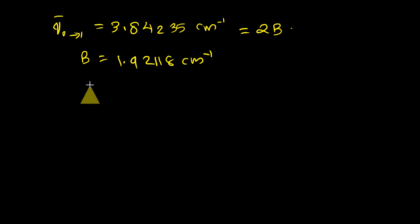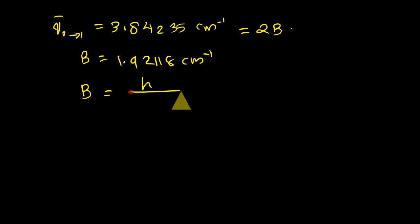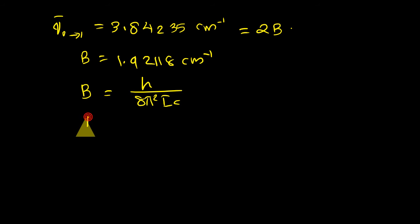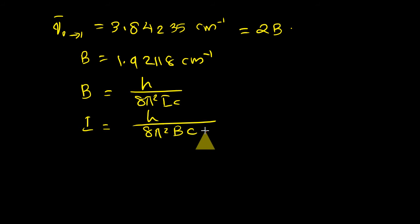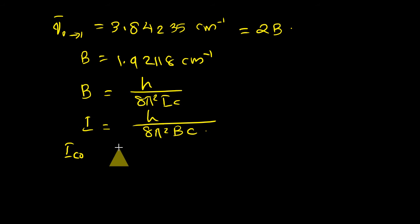We know the expression for the rotational constant B: B equals h divided by 8π²IC. Therefore, from this, the moment of inertia I equals h divided by 8π²BC, and from this we can calculate the moment of inertia for the carbon monoxide molecule.